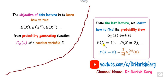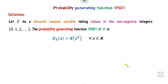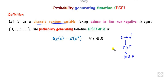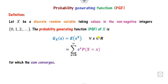We have seen in the last lecture how you can find the probabilities from the probability generating functions, which is available on my channel Dr. Harish Gar. The probability generating function is defined only for discrete random variables, as the expected value of S^X. Whenever you take S as e raised to power T, this PGF converts into the moment generating function. Since this is an infinite series, whenever the series converges, you can call it the probability generating function denoted as G(S).